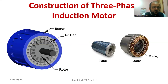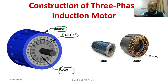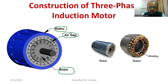Observe carefully here. The outer covering is the stator — it is external, and we provide the supply there. Internally, we have the rotor, which is connected to the shaft. In between the stator and rotor, there is an air gap. That is the basic construction overview.